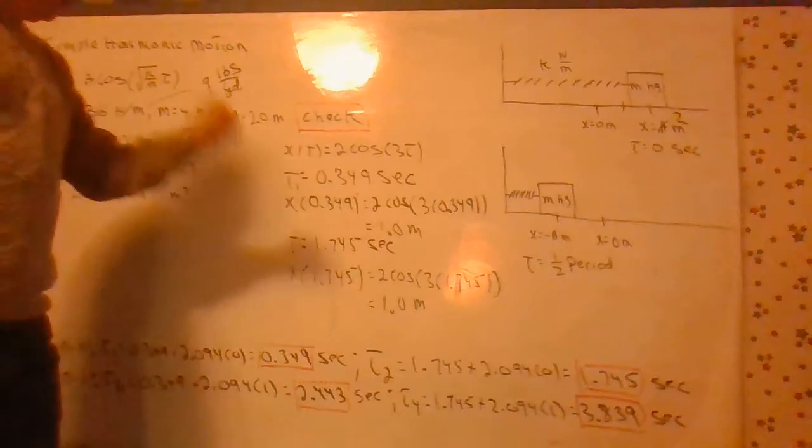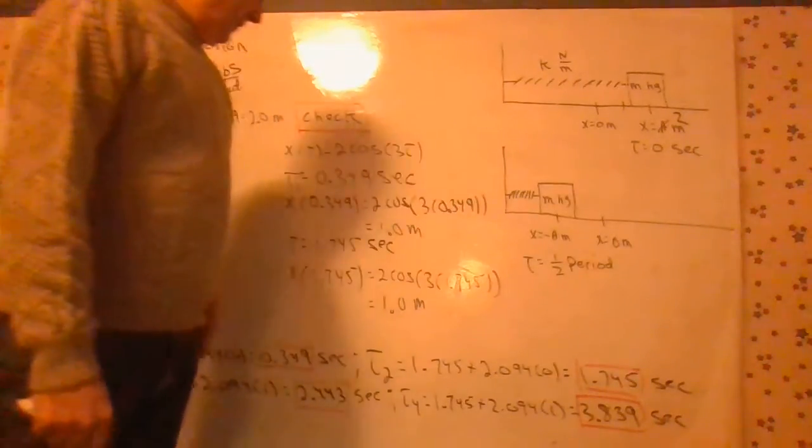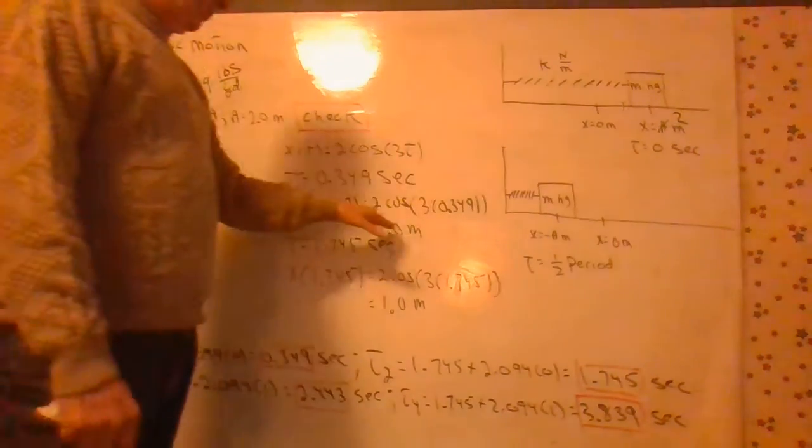It's off by a little bit because we rounded this, obviously, but it should give you 1.0.